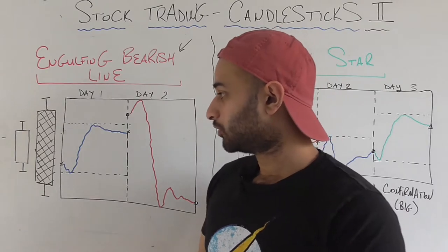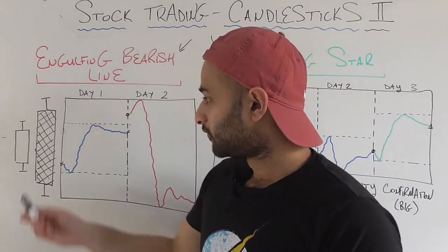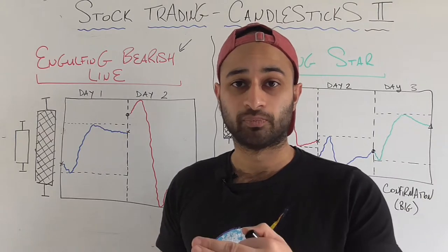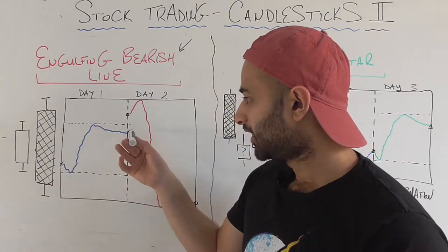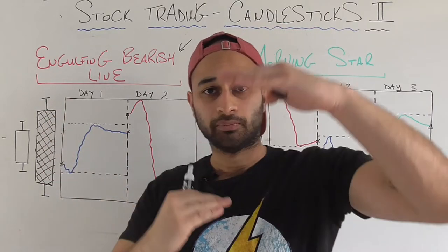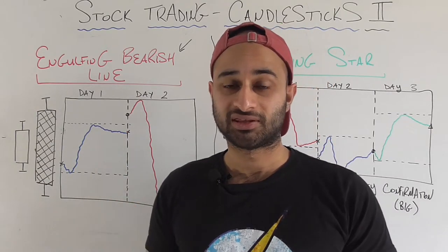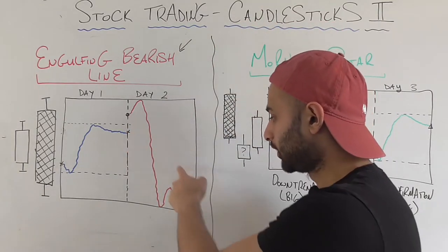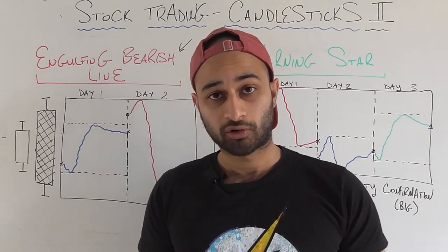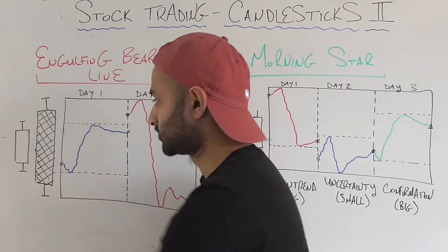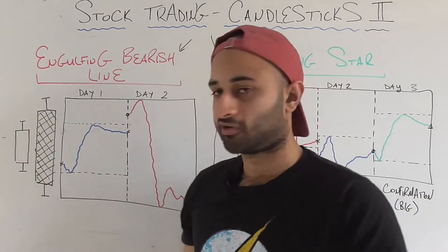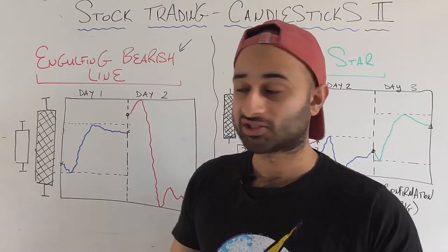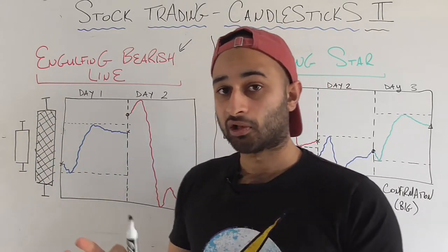For the engulfing pattern, we look at two consecutive days. The first day's candlestick is filled in white, meaning the opening price is below the closing price — so the price goes up on average throughout day one. The second day shows a much bigger candlestick filled in black, meaning the opening price is higher than the closing price — so the price is going down on average. What makes it 'engulfing' is that the body of the second candlestick is much bigger than the first, essentially taking up more space than the entire first day's candlestick.